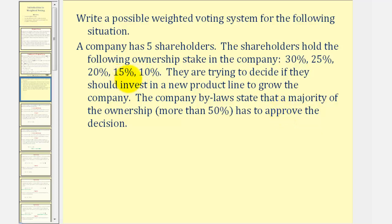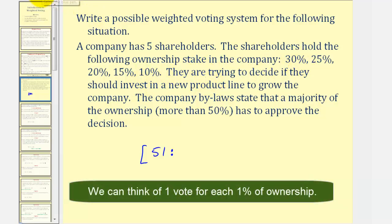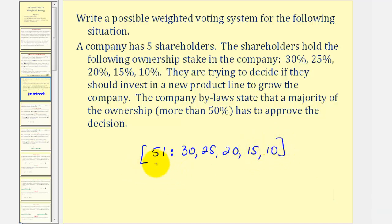The company bylaws state that a majority of the ownership — more than 50% — has to approve the decision. Because the ownership is given as percentages and the quota has to be more than 50%, we'll start with the quota, which we'll set at 51, then a colon, followed by the weight of each ownership — which we can also think of as the number of votes given to a voter based upon their percent of ownership. So we could list the weights as 30, 25, 20, 15, 10. This would be a possible weighted voting system for this situation.